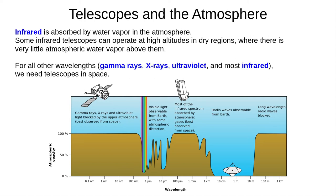Infrared radiation is absorbed by atmospheric water vapour. Some infrared telescopes can operate at high altitudes in dry regions, such as mountains near the equator, where there is little atmospheric water vapour above them. But for all other wavelengths — gamma rays, x-rays, ultraviolet, and most infrared wavelengths — we need telescopes in space.